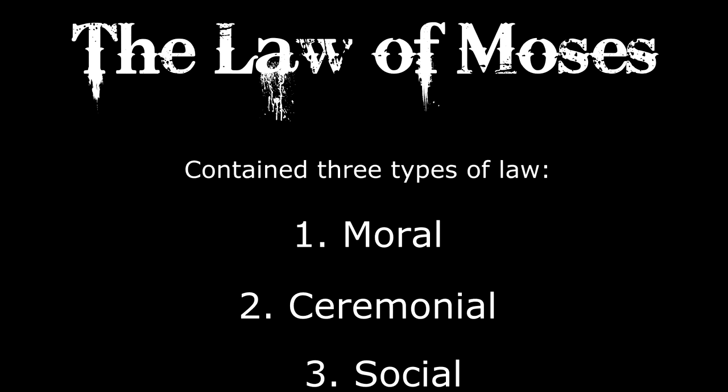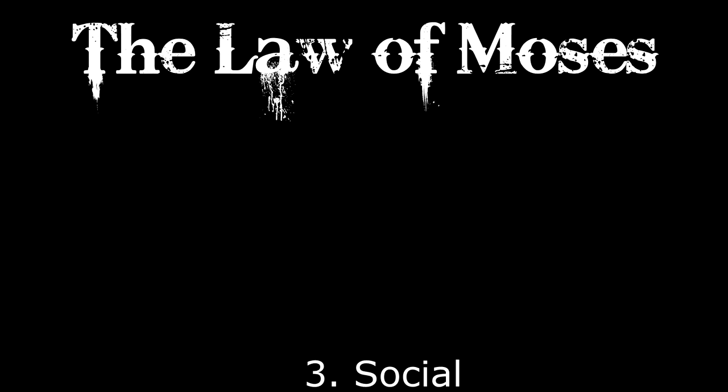Finally, the third part of the Law of Moses was the social or civil part. Like our own civil laws, this set the ground rules on how people were to interact with one another, resolve disputes, and generally create a stable and harmonious society.